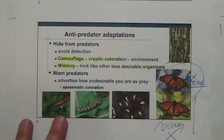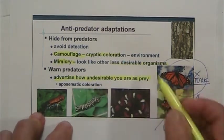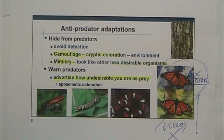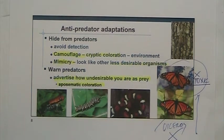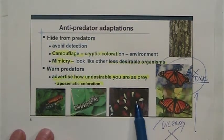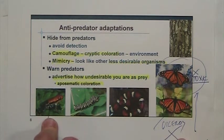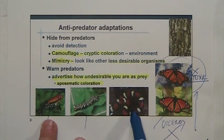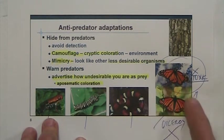So camouflage and mimicry are ways for prey to avoid predators. Now, sometimes organisms also advertise how distasteful or toxic they are — this is called aposematic coloration, though you probably don't need to remember that term. But every time you see brightly colored organisms, for the most part it means that they are poisonous or toxic. It's a way for them to say: eat me at your own risk, because I'm gonna kill you if you eat me. So most toxic organisms are brightly colored in nature, except if you are one of those cheaters like the viceroy, that is mimicking another one and by that gets protection.